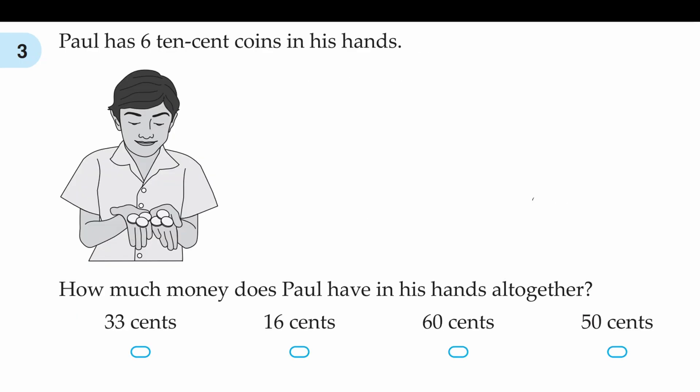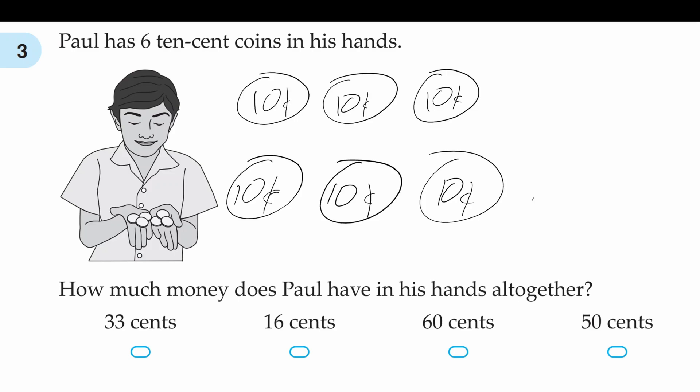Question three: Paul has six 10-cent coins in his hands. How much money does Paul have altogether? If Paul has six 10-cent coins, that is equal to six coins times 10 cents, which is equal to 60 cents.